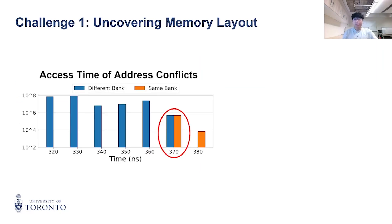Here is a sample visualization of the access time difference between same-bank and different-bank pairs for the entire memory layout. However, we see a concerning overlap at around 370 ns, where they are indistinguishable.